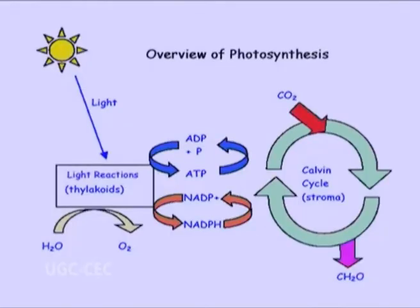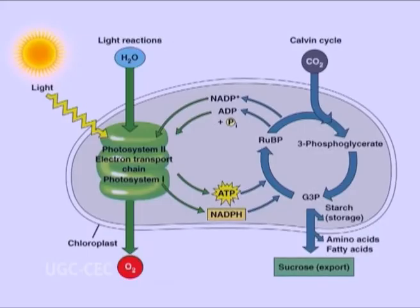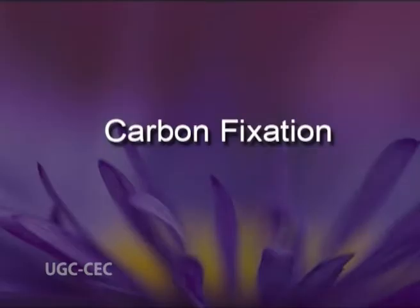Photosynthesis occurs in two stages in a plant cell. In the first stage, light-dependent reactions capture the energy of light and use it to make ATP and NADPH. In the next stage, the light-independent or dark reactions use this ATP and NADPH to convert carbon dioxide and water into organic compounds that can be used by the plant. This set of reactions is also called carbon fixation.